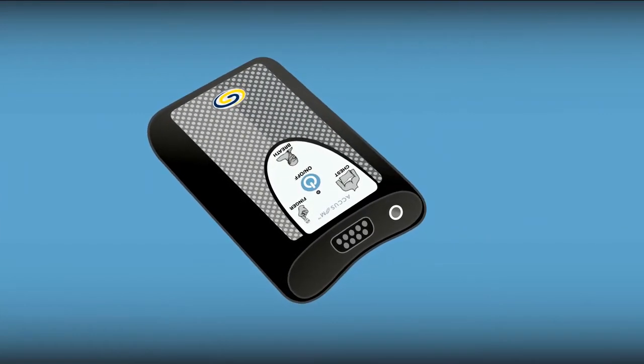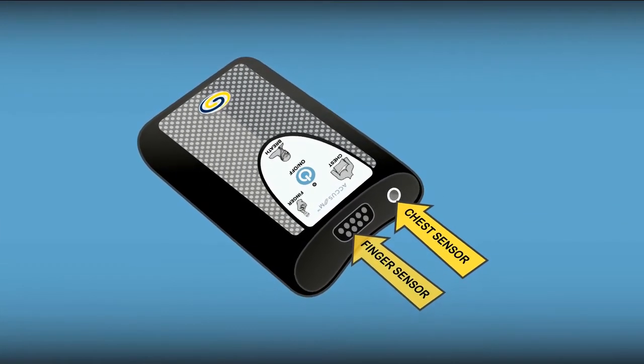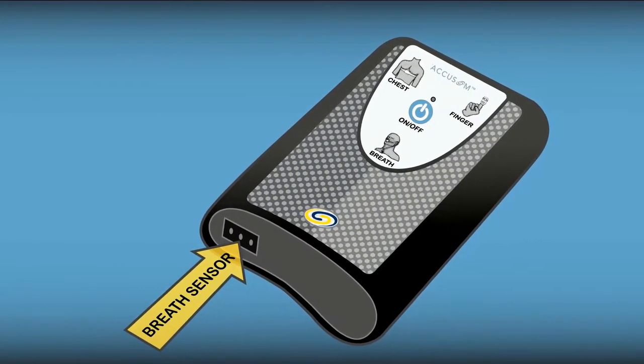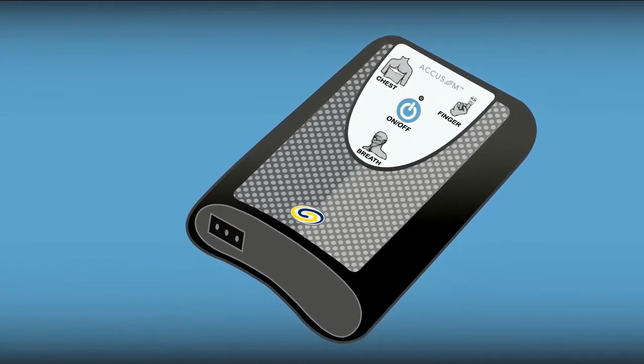The top panel has openings to attach the finger sensor and the chest sensor. The bottom panel has an opening to attach the breath sensor, and the on-off button is on the front panel.